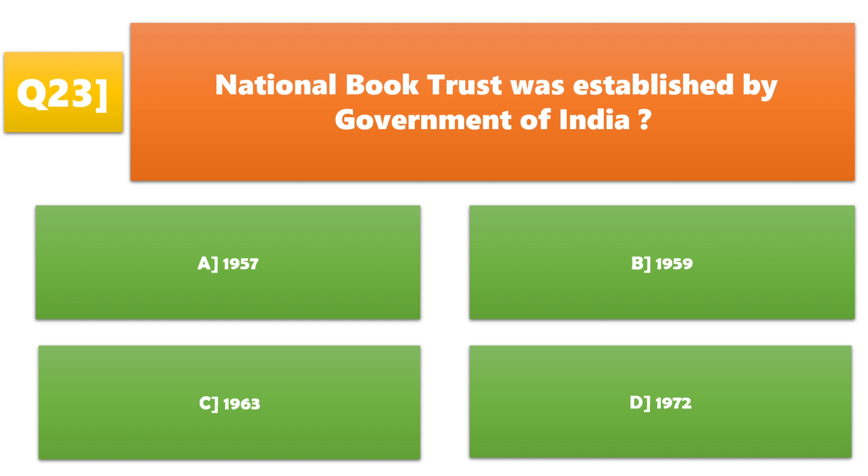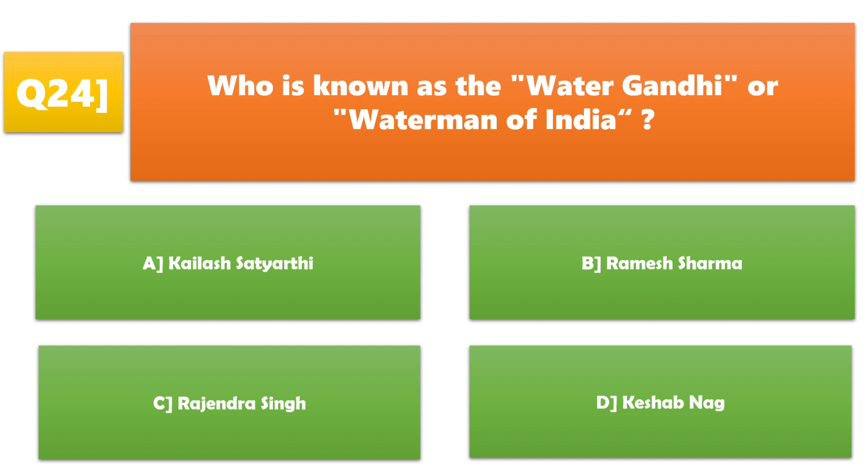National Book Trust was established by the Government of India in: A. 1957, B. 1959, C. 1963, D. 1972. A. 1957 is the correct answer.